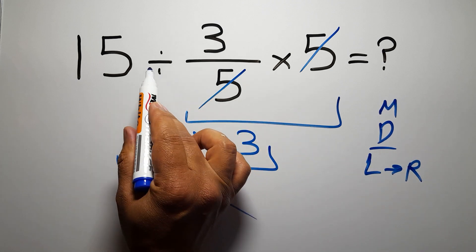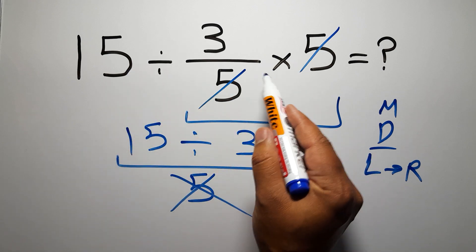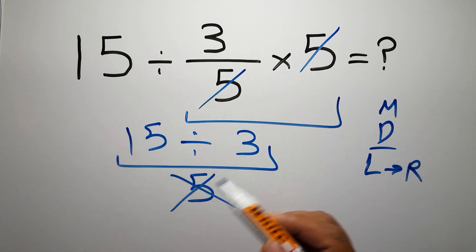So here, first we have to do this division, not this multiplication. If you do this multiplication before this division, it is wrong.